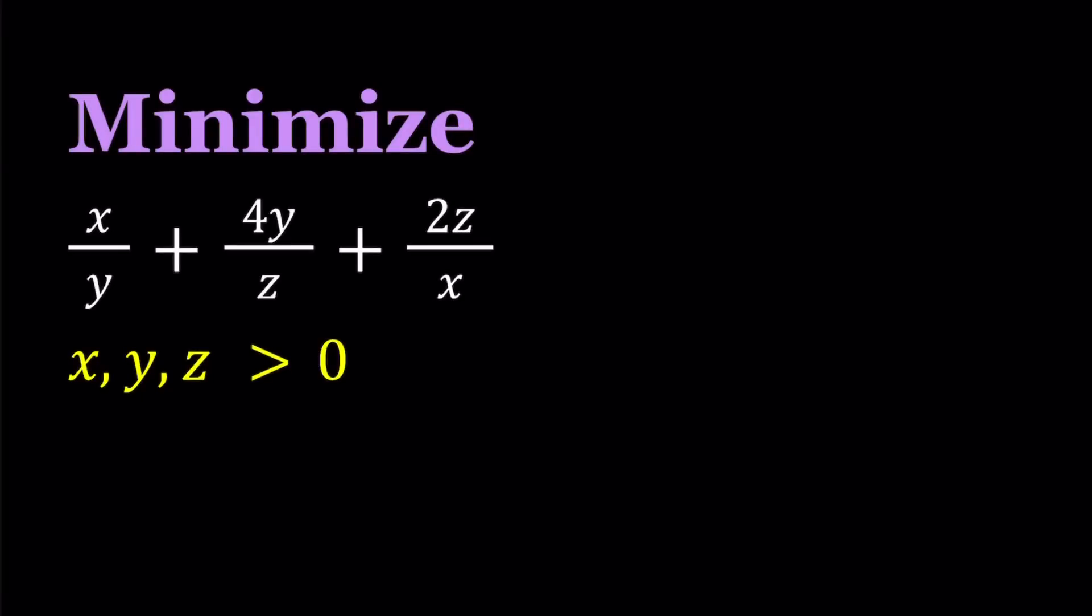Hello everyone. In this video, we're going to be finding the minimum value of an expression. x, y, z are positive quantities, and we're trying to minimize x over y plus 4y over z plus 2z over x.